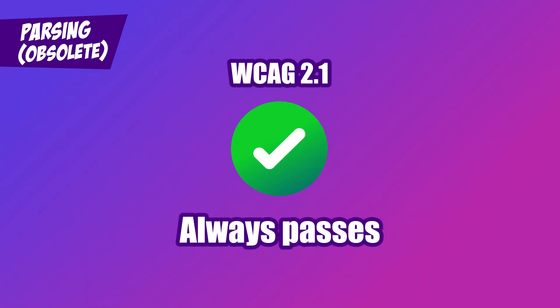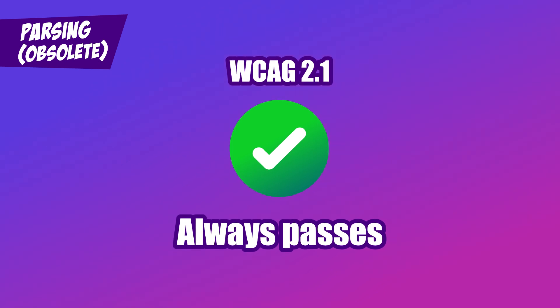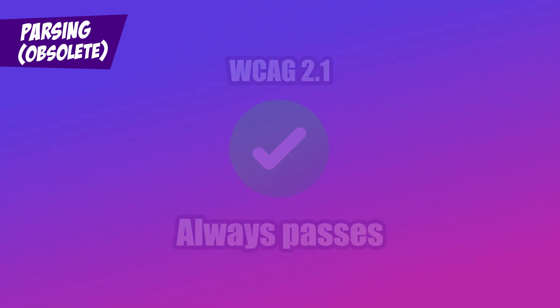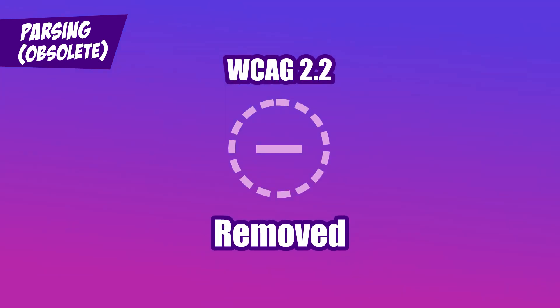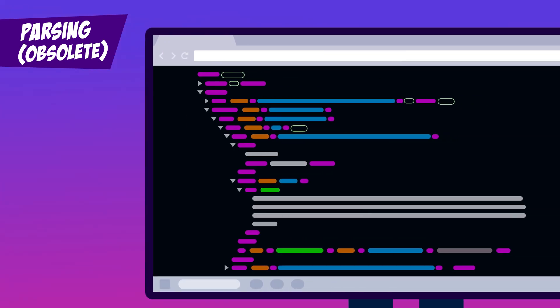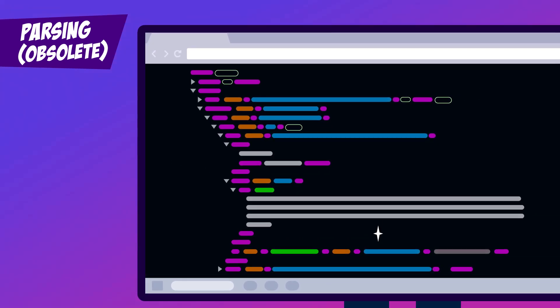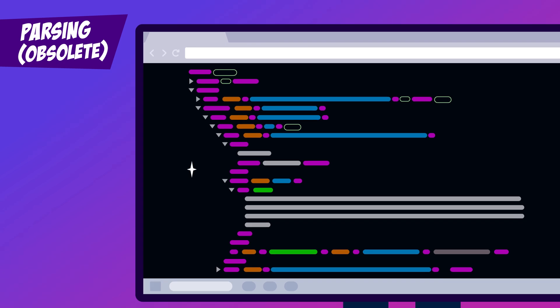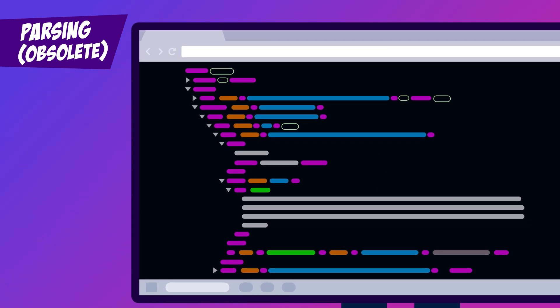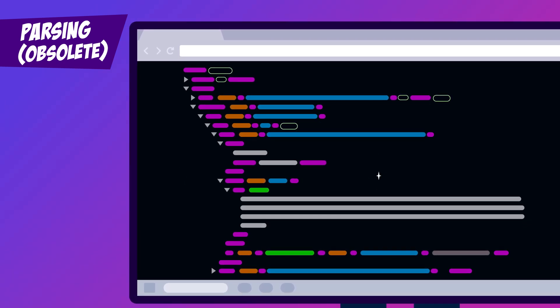In WCAG 2.2, parsing was retroactively set to always passes under WCAG 2.1, and completely removed in 2.2. Why? Modern browsers and tools have become much better at handling messy or imperfect code, making this criterion less relevant for today's web.